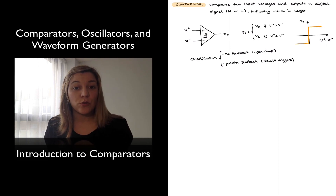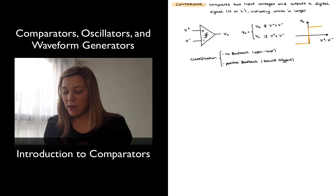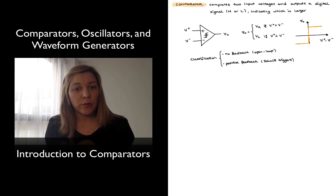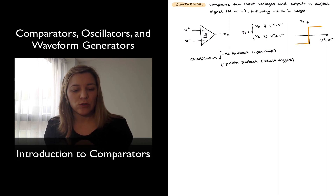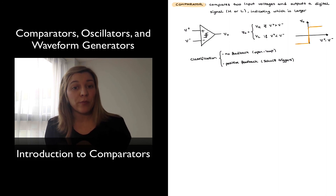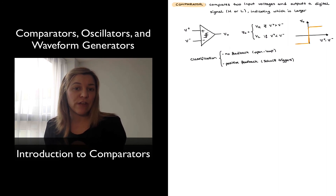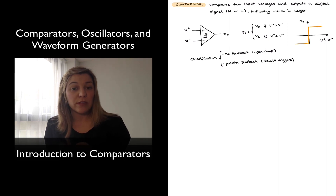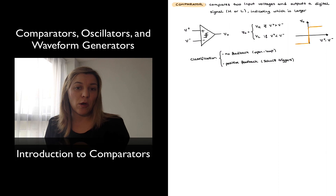In what follows, we are going to start looking at open loop comparators, or no-feedback comparators, and then move on to Schmitt triggers to see what their advantages are over open loop comparators. We will initially look at the operation of comparators as being similar to that of an op-amp in open loop, and then transition into looking at the particular structure and functions of a comparator that are not shared with an op-amp.